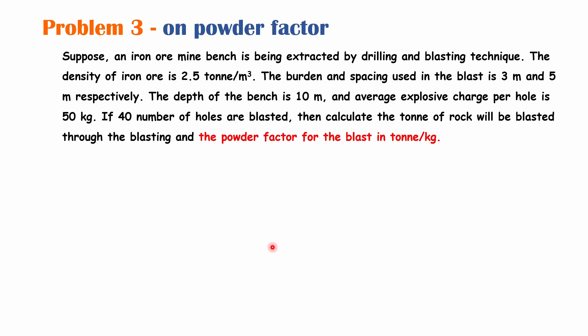Suppose an iron ore mine bench is being extracted by drilling and blasting technique. The density of iron ore is 2.5 ton per meter cube. The burden and spacing used in the blast are 3 meters and 5 meters respectively. The depth of the bench is 10 meters and the average explosive charge per hole is 50 kg. If 14 holes are blasted, calculate the tonnage of rock blasted and the powder factor in ton per kg.